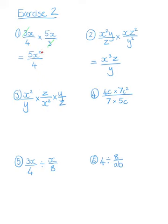So 5 times x squared, and then in the denominator, 4. Then with number 2, it's much the same, except there's a whole lot of letters. We've got x squared and we've got x, which means we've got 3 x's that are being multiplied by each other.